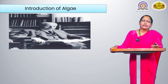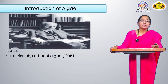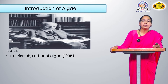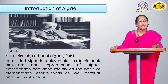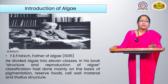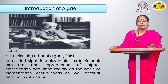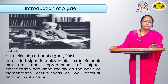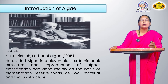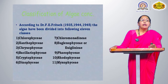We see the introduction of algae. Fritsch is the father of algae, who in 1935 divided algae into 11 classes. In his book 'The Structure and Reproduction of Algae,' the classification was made with the help of pigmentation, reserve food material, cell wall, and reproduction.